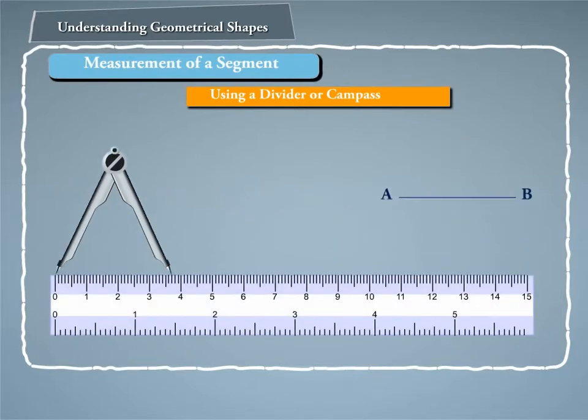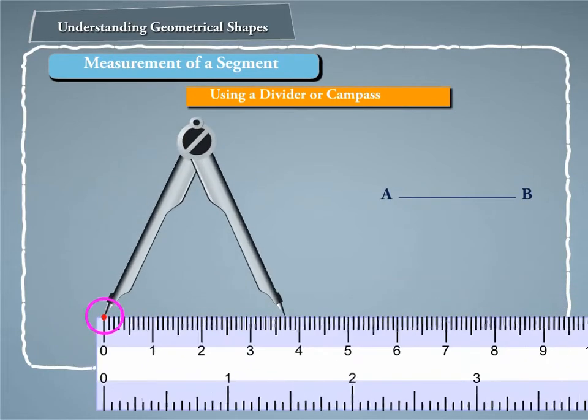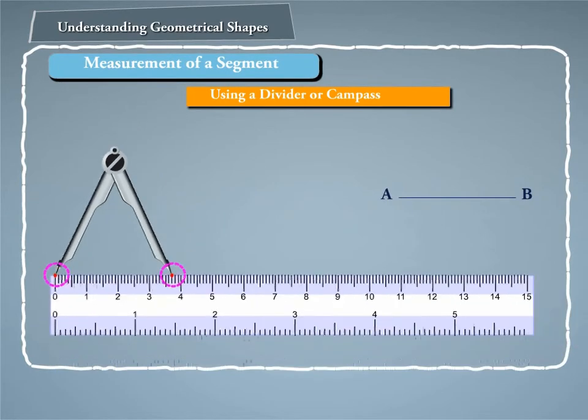Now we put the divider on the ruler so that one point of the divider is at the zero mark. We then read the mark which corresponds to the second point of the divider. Here, the length of AB is 3.7 centimeters.